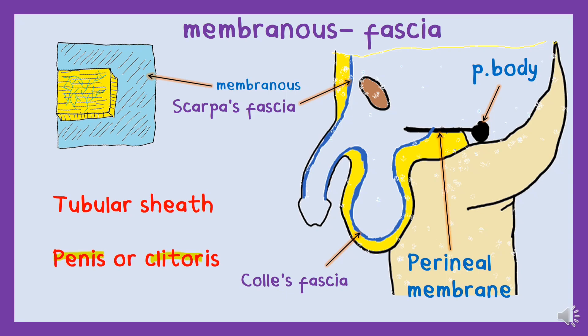The membranous fascia continues down towards the clitoris in the case of a woman, and the penis in the case of a man, forming a tubular sheath. After the formation of this sheath-like structure, it enters the wall of the scrotum, where the name changes again — it is called Camper's fascia, but remember, Camper's fascia only in the region of the scrotum. Posteriorly, it fuses with the perineal body and the perineal membrane.